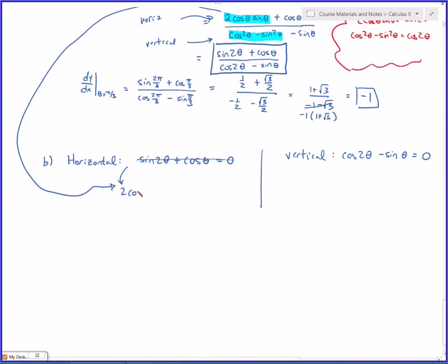As 2 cosine theta sine theta plus cosine theta equals 0. That's actually a little bit better because I can factor this. Do you see that? What can I factor out? Cosine theta leaves behind what? Now what you have is the product of two functions equal to 0. And the 0 property rule says what? Cosine of theta equals 0, and 2 sine of theta plus 1 equals 0.